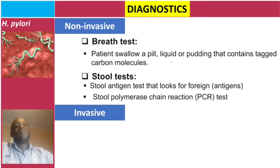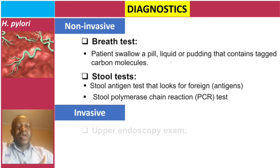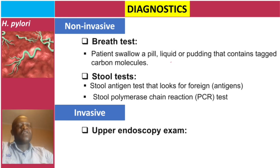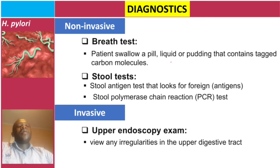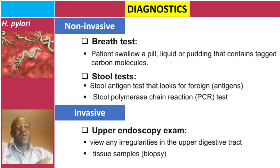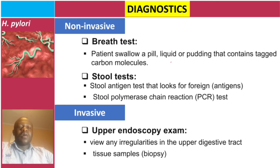The most important invasive method is upper endoscopy examination, which helps us view any irregularities in the upper digestive tract. An added advantage is that it also allows us to take biopsy tissue samples.